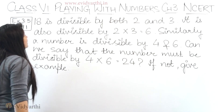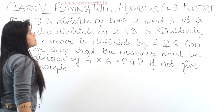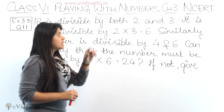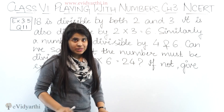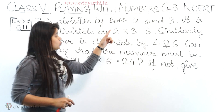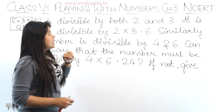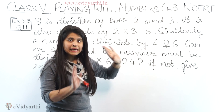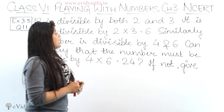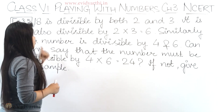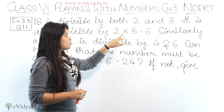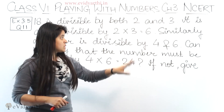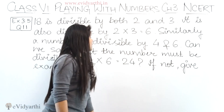In this question we have: 18 is divisible by both 2 and 3. 18 is divisible by 2 and 3 — very true. 2 into 9 is 18, and 3 into 6 is 18. So 18 is divisible by both 2 and 3. It is also divisible by 2 into 3, which equals 6. And 18 is also divisible by 6.